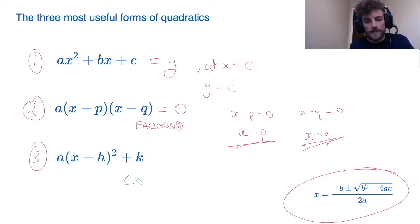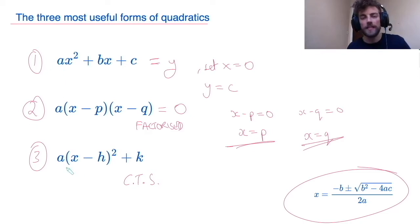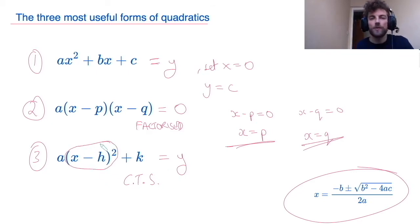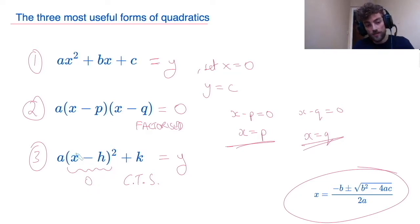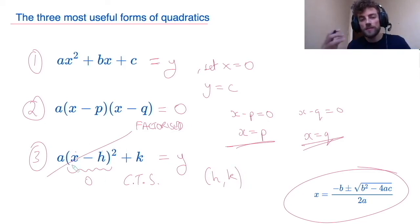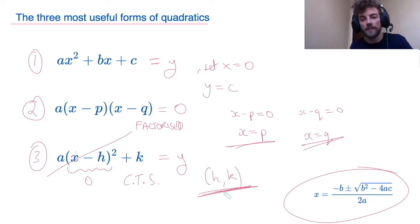Now the final form, which I like to call the complete the square form. If you've learned completing the square at GCSE level or above, you should know how to go from form 1 to this form. Why is this form useful? Well, if I set this equal to y and want to plot a graph, I can immediately read off the vertex — the maximum or minimum point. This bracket is a square number, so it must be positive, and the lowest it can be is 0. This happens when x equals h, making y equal to k. Therefore, h, k is my vertex.